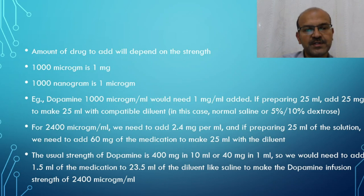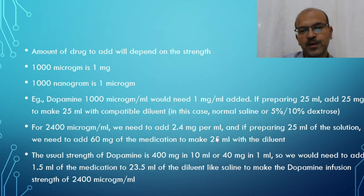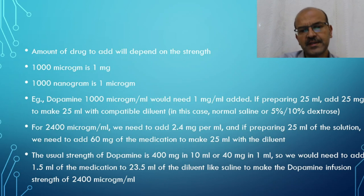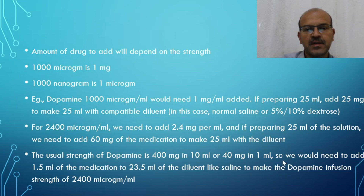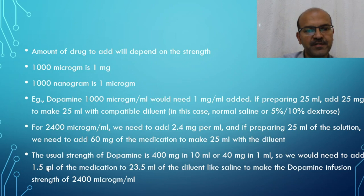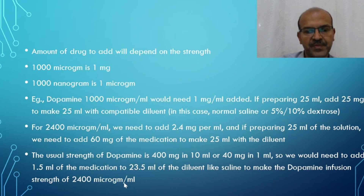For 2400 micrograms per mL, you need 2.4 milligrams per mL, so for 25 mL that is 2.4 × 25 = 60 milligrams. The common dopamine formulation is 400 mg in 10 mL, equivalent to 40 mg per mL. To get 60 mg, you add 1.5 mL of the medication and 23.5 mL of diluent (normal saline) to make 25 mL at a strength of 2400 micrograms per mL. This dose is irrespective of the baby's weight.